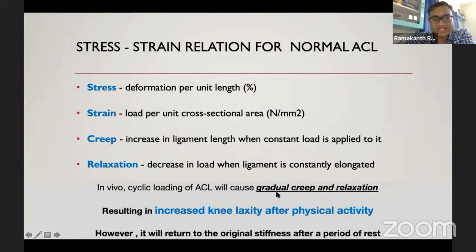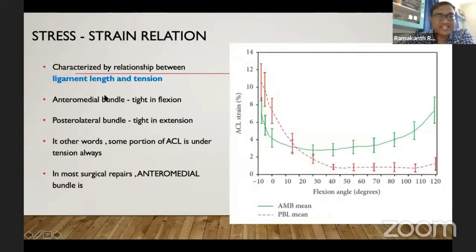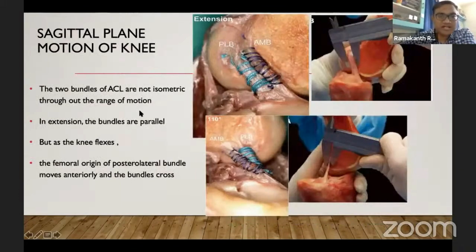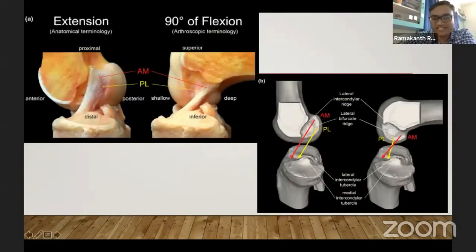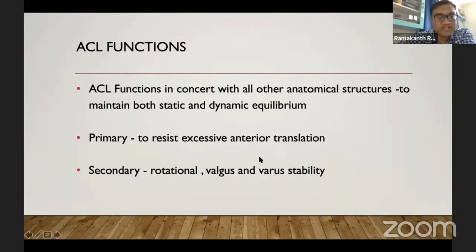The stress-strain graphical representation of each bundle shows that the anteromedial bundle is tight in flexion, while the posterolateral bundle is tight in extension. The two bundles are not isometric throughout the range — in extension the bundles are parallel to each other, while in knee flexion they twist around each other. The width also differs during flexion and extension, illustrating the complex anatomy of the native ACL.